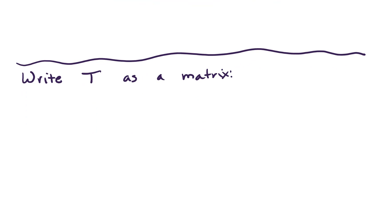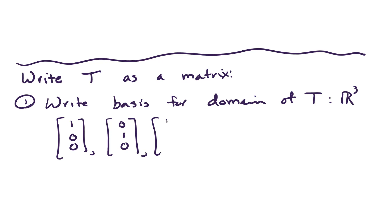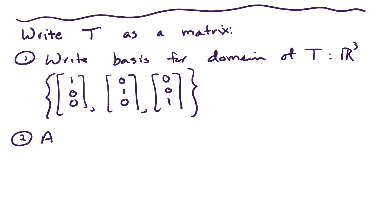So we're trying to write T as a matrix. There's really three steps. We need to write a basis for the domain of T, which in this case was R³. So our basis for R³ looks like (1,0,0), (0,1,0), and (0,0,1). That's a really good basis to work with for R³. Step two, apply the linear transformation T to the basis elements.